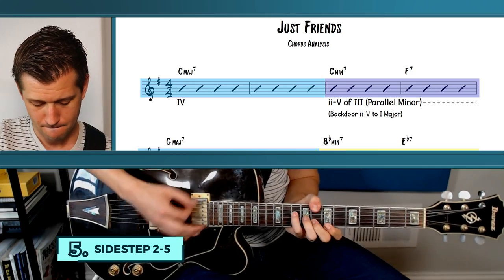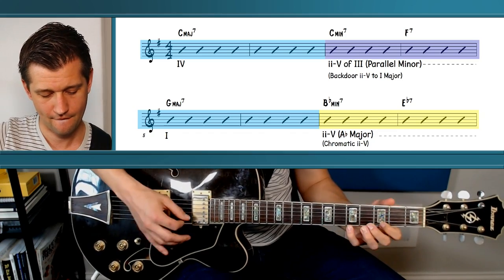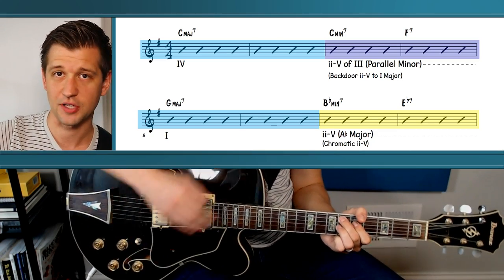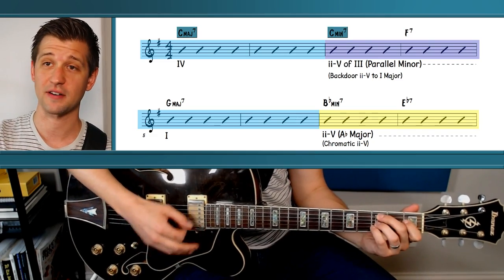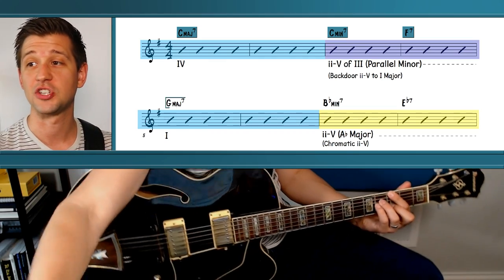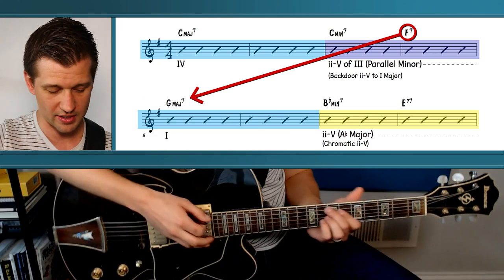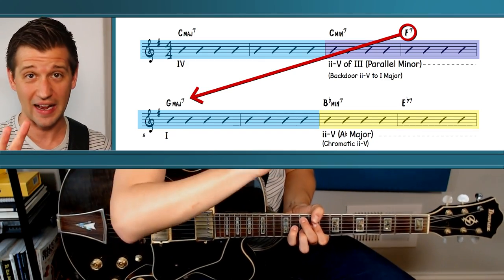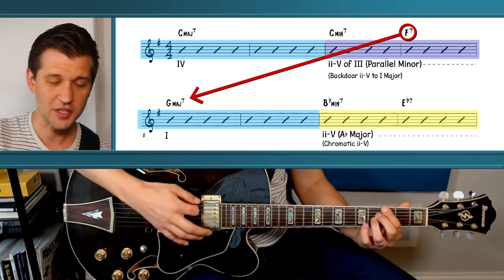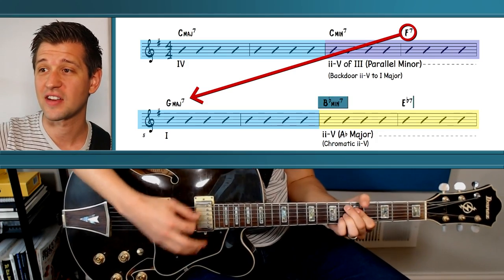The next concept is called the sidestep two fives. A good example shows up in 'Just Friends.' We start with C major seven going to C minor seven, F seven — referencing the parallel minor — and resolve to G major seven. By the way, that F seven is also a backdoor dominant going to G major seven. Once we get to G major seven, we have a line that goes B flat minor seven, E flat seven.